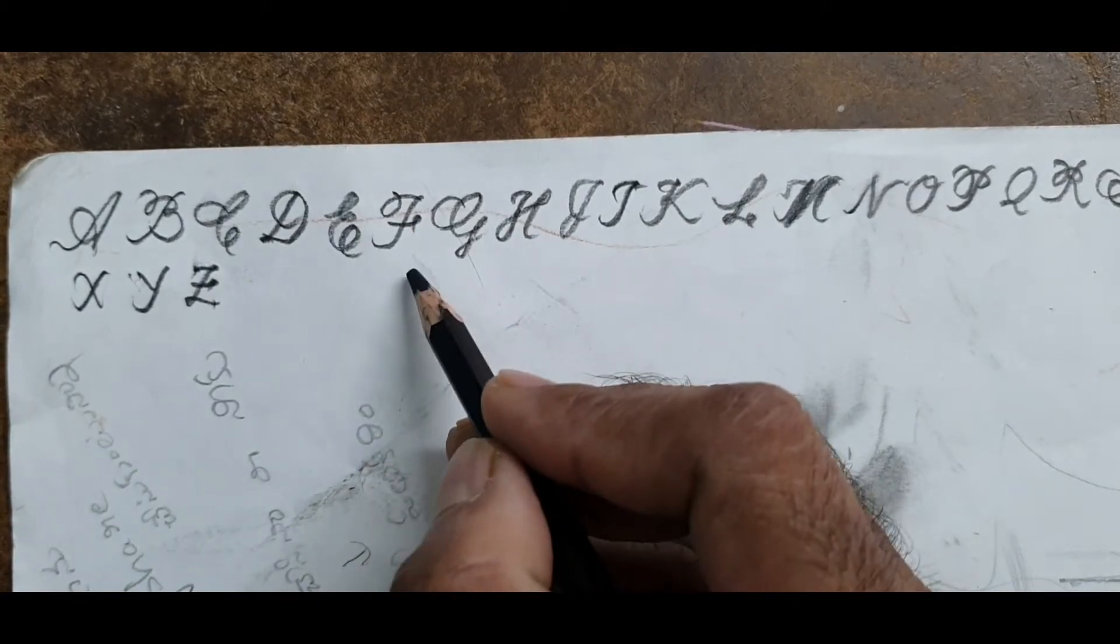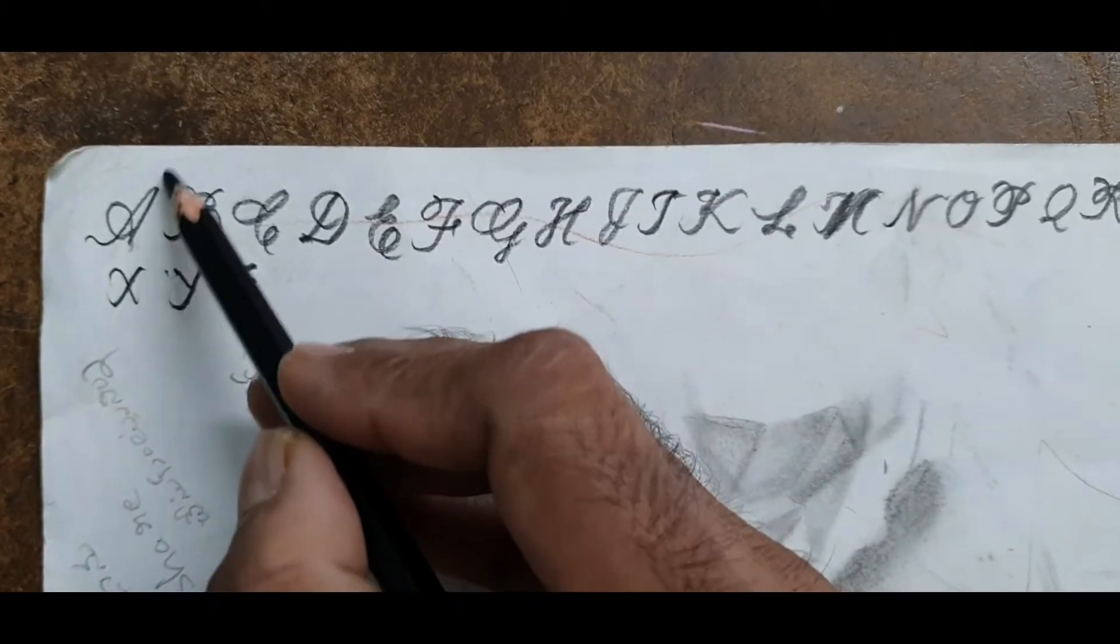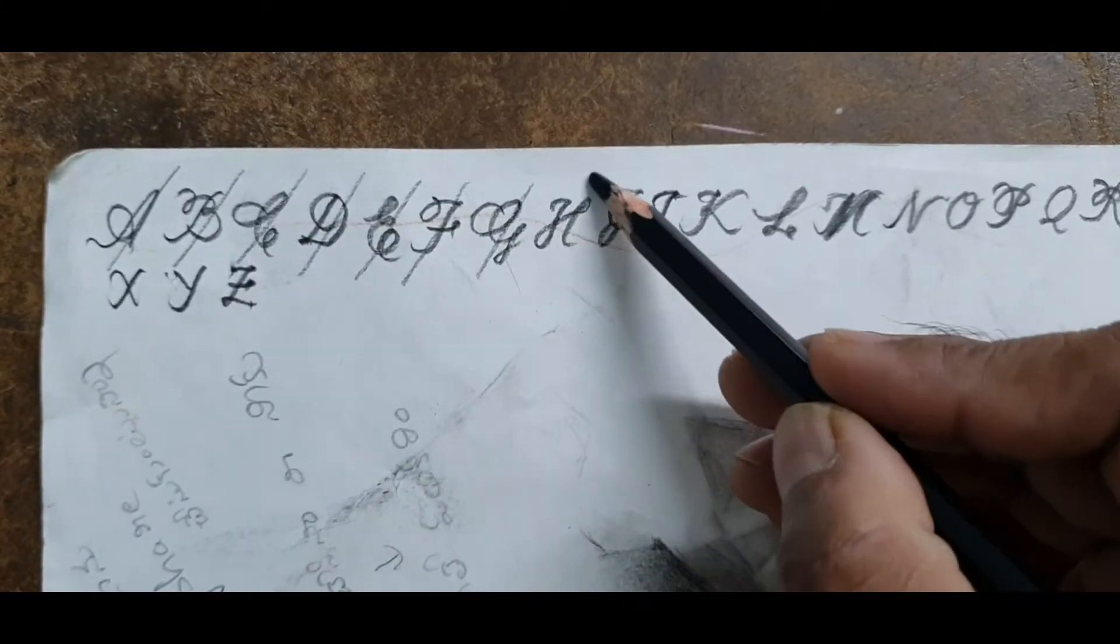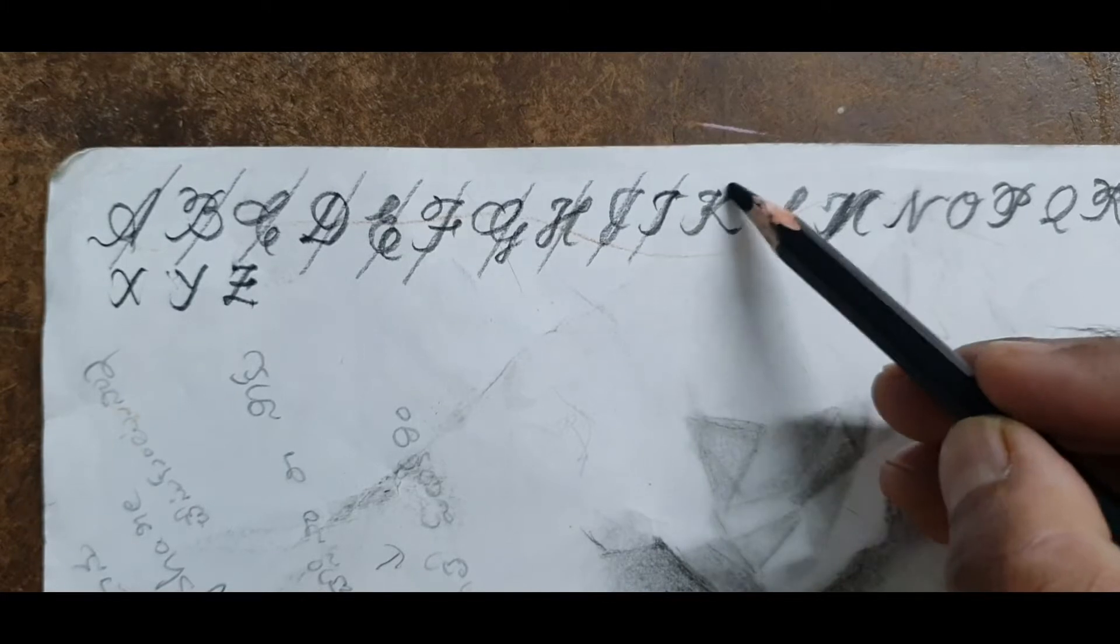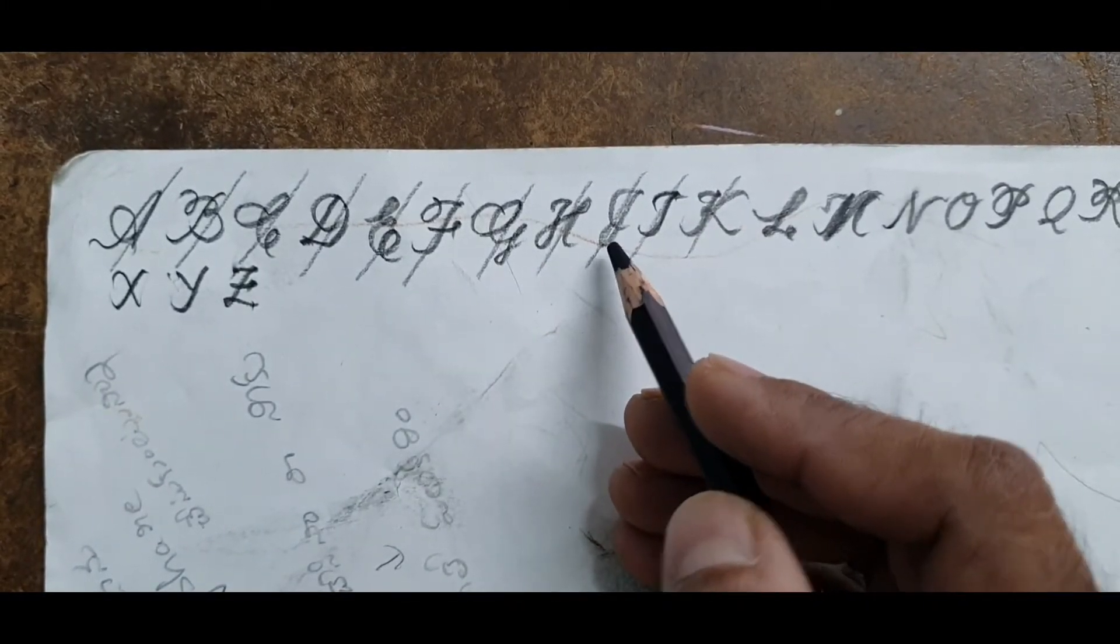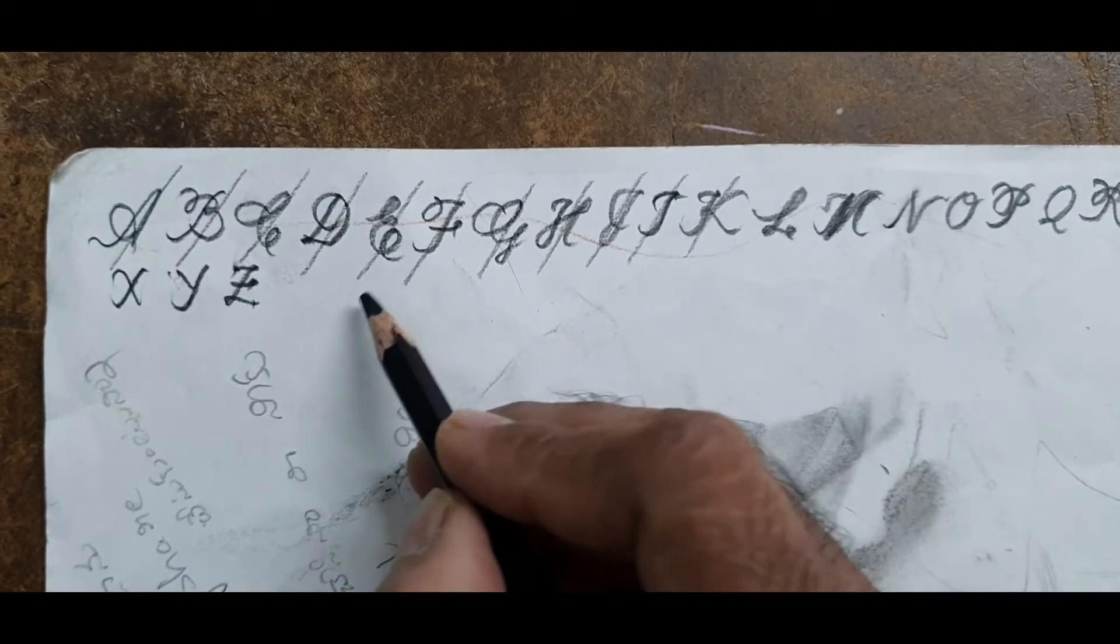If you closely observe, all these letters are in 45 degrees. If you slice them in 45 degrees, they become two equal parts. That means we are supposed to write English in 45 degrees.